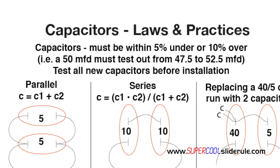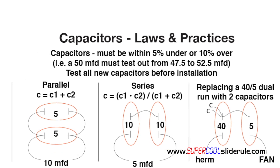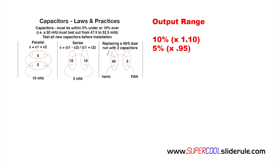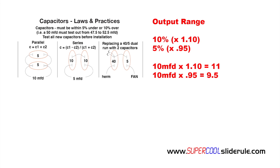The output must be no less than 5% under or 10% over. Here is the math: for 10% over, we multiply our capacitor rating by 1.10, and for 5% under, we multiply our capacitor rating by 0.95. So 10% over is 11 and 5% under is 9.5.